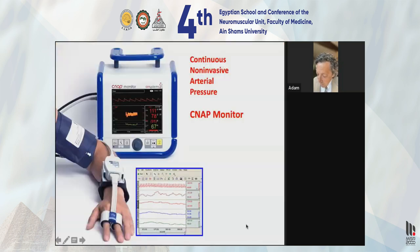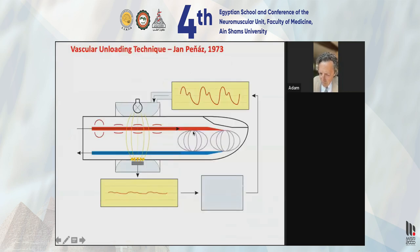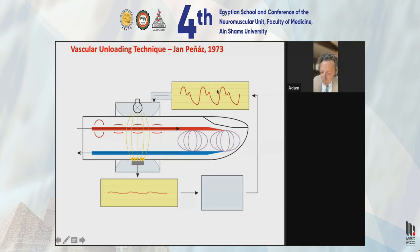The CNAP monitor provides beat-to-beat blood pressure tracing through tandem blood pressure cuffs with pulse oximetry, equivalent to an arterial line. It is not a great absolute measurement but is more useful for measuring relative fluctuations of blood pressure. It is a proprietary technology based on work by Jan Pinas in 1973, showing that volumetric analysis of the finger could produce a servo loop approximating blood pressure changes.